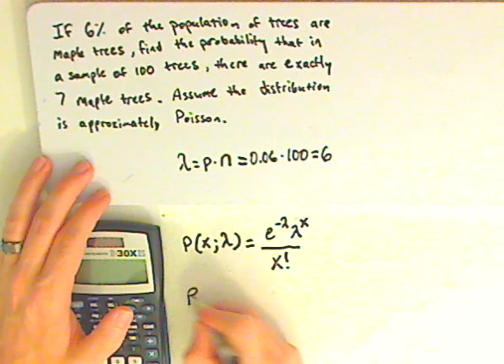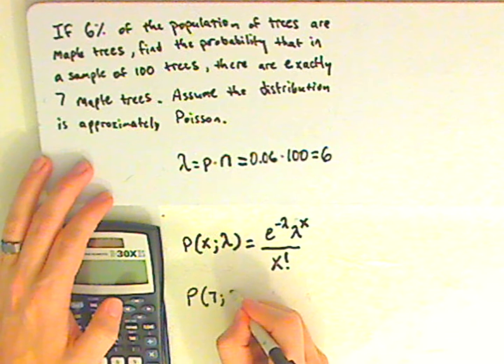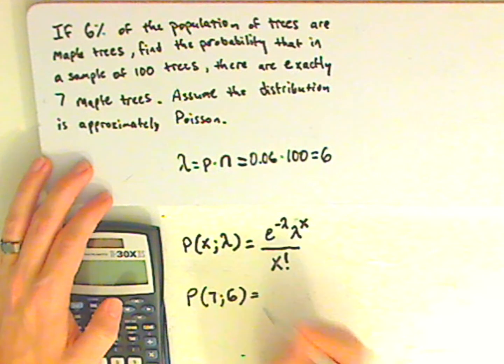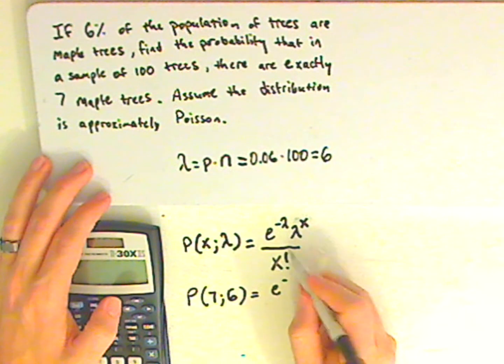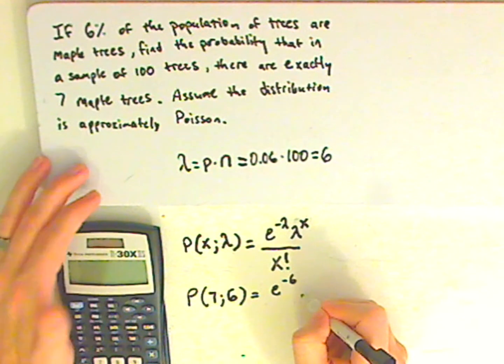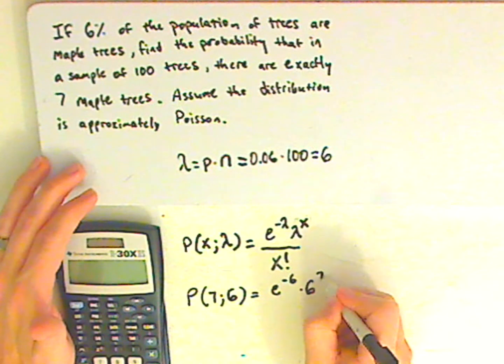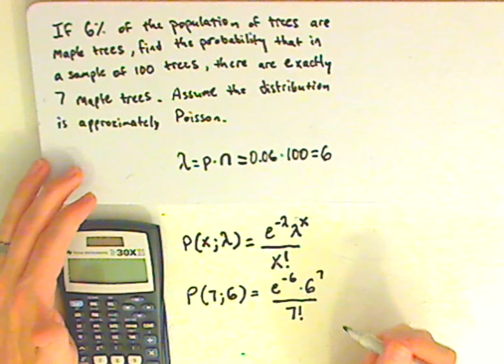Now to find the probability of 7 when you expect 6 out of that 100, now you're just going to plug everything in. So E raised to negative 6 times 6 raised to the 7 over 7 factorial.